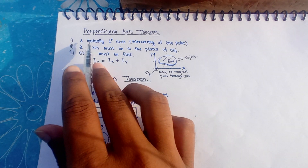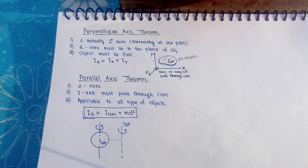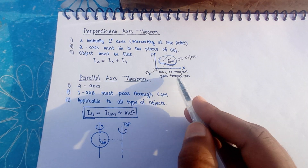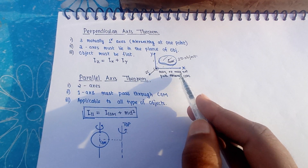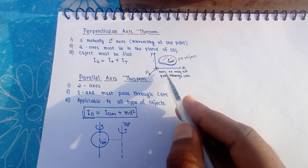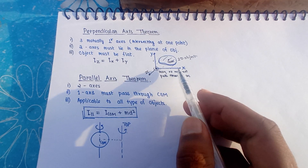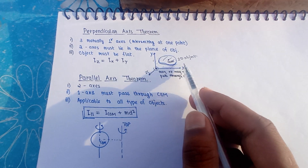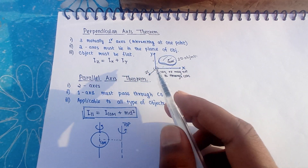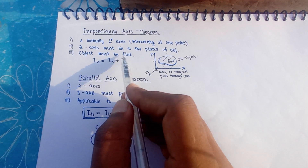In the perpendicular axis theorem, there are three mutually perpendicular axes intersecting at one single point. That single point may or may not pass through the center of mass — remember this. That intersecting point can even lie outside the object. The object must be flat.